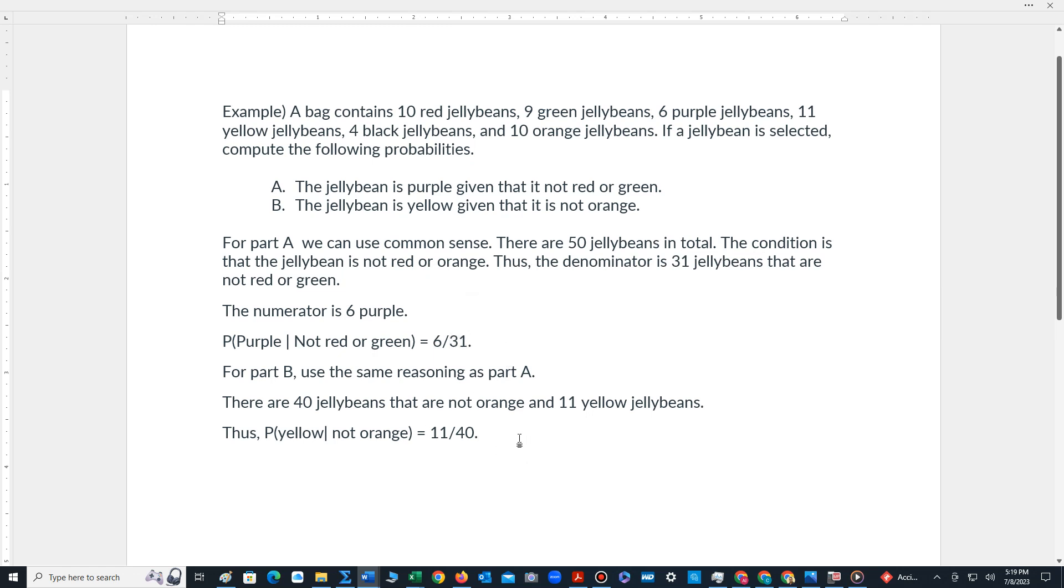And we can use the same reasoning for Part A. It's saying what's the chance that a jelly bean is yellow given that it is not orange. How many jelly beans are not orange? If we count them all up,